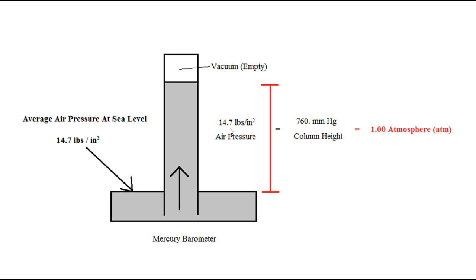14.7 pounds per square inch is also known as the atmosphere, or the atm. So we can talk about air pressure three different ways: one, the atmosphere, which is the average air pressure at sea level; two, the pounds per square inch it's pushing, which is 14.7; and three, that it can hold up a column of mercury 760 millimeters. These three are all expressions of average air pressure at sea level.